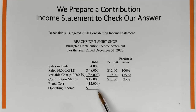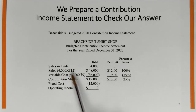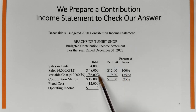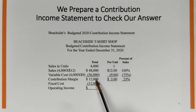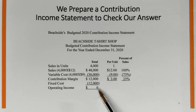To break even — earning a target profit of zero — we've got to sell $48,000 worth of product. That's 4,000 units times $12. We can verify: $48,000 times 75% gives variable cost of $36,000, and subtracting the $12,000 in fixed cost gives us exactly break even.